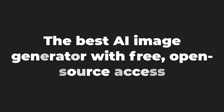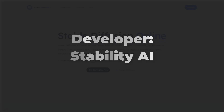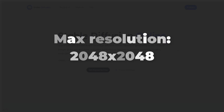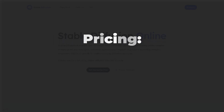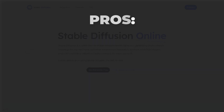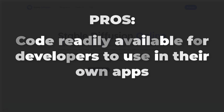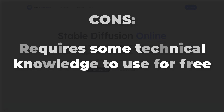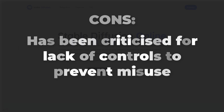Number 2: Stable Diffusion — the best AI image generator with free, open-source access. Developer: Stability AI. Platform: browser-based or API. Max resolution: 2048x2048 (version 2.0). Pricing: free, or credit system via Dream Studio. Pros: possible to use for free, code readily available for developers, higher resolution and more adjustment options. Cons: requires some technical knowledge to use for free, and has been criticized for lack of controls to prevent misuse.